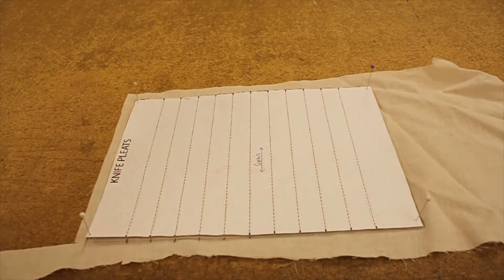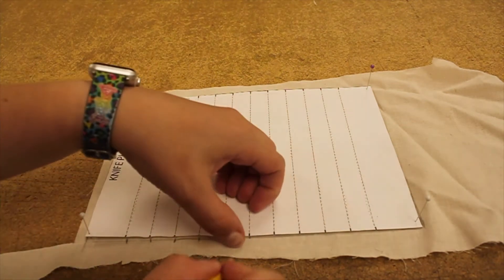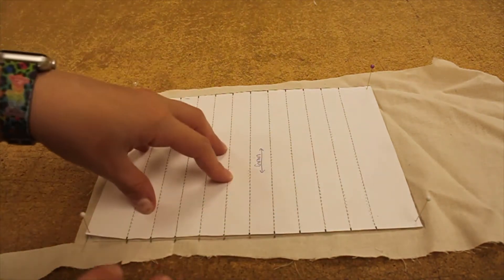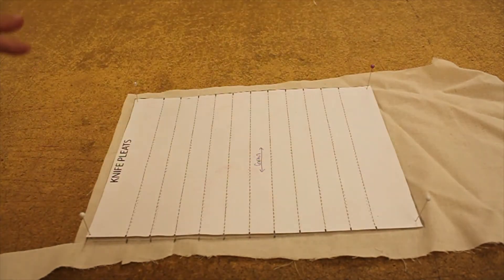Any of those ways works just fine, as long as you are able to get the lines as exact to the pattern as possible in the correct place. So go ahead and get all your lines drawn on your fabric and cut it out so that it's ready for folding.